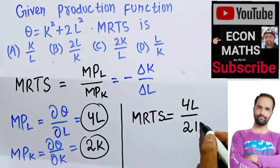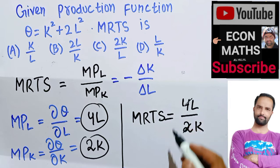So 2 divided by 2 is 1, 4 divided by 2 is 2, that means we got 2L upon K.